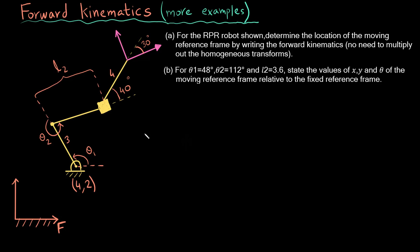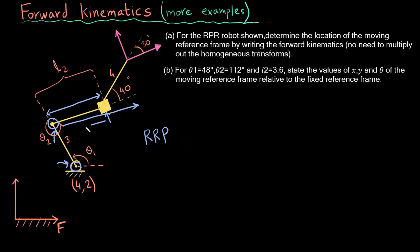The second thing to note is that this robot is an RRP robot. This means there is a revolute joint here and a revolute joint here, so there is a motor at each of these joints which allows the links to rotate. Then there is a prismatic joint at this point, meaning this length is not fixed but can increase or decrease.